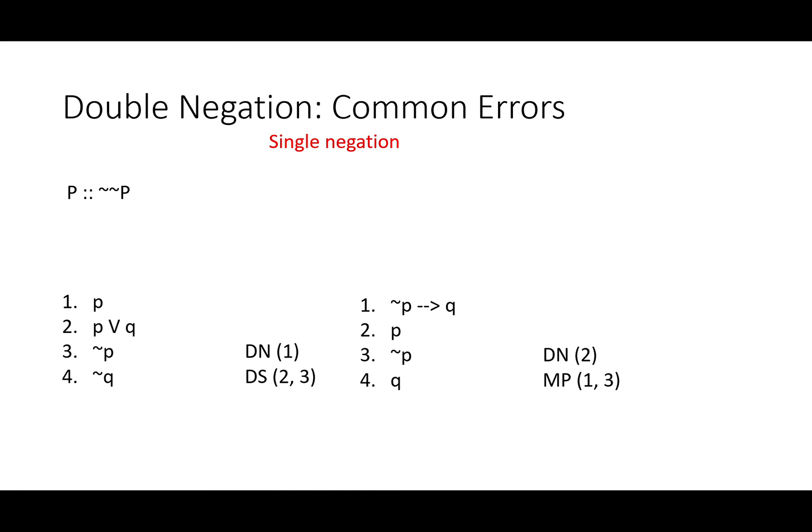Single negation is an even worse error because it's logically wrong. Here we go from P and either P or Q to not P trying to get not Q. That won't work. Obviously, P is not logically equivalent to not P.